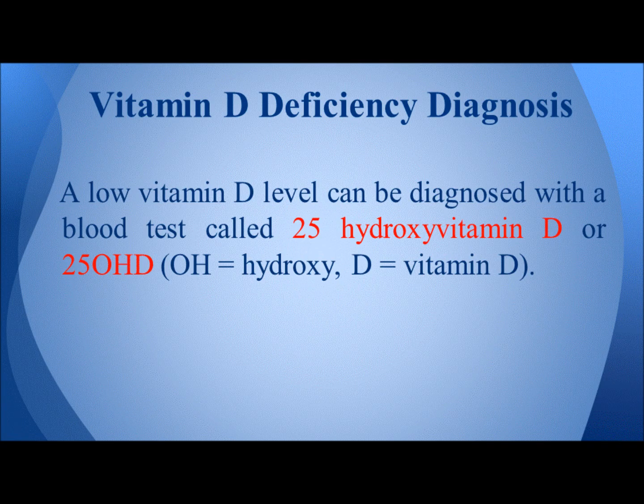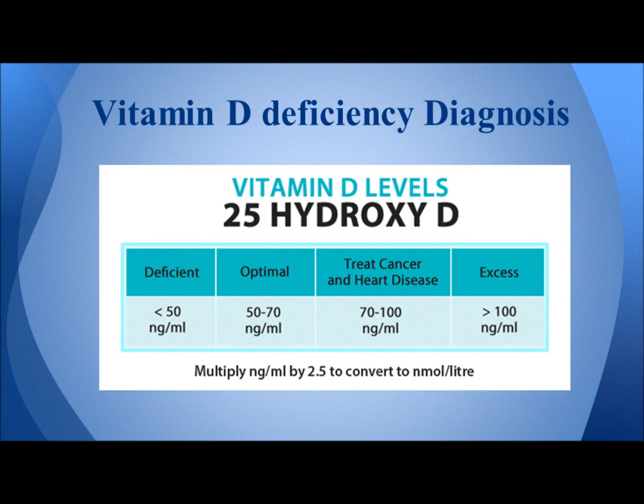The only way to diagnose vitamin D deficiency is by a blood test called 25-hydroxy vitamin D. Whenever someone develops signs and symptoms of vitamin D deficiency, they should take the blood test. In this slide you can see different levels of vitamin D. In the table, deficient is considered less than 50 nanograms per milliliter, optimal is 50 to 70 nanograms per milliliter, and excess is over 100 nanograms per milliliter. It is important to have early diagnosis for vitamin D deficiency to prevent the risk of having bone disease.